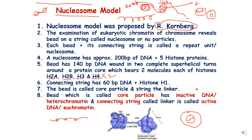A nucleosome has approximately 200 base pairs of DNA plus 5 histone proteins. The bead has 140 base pairs of DNA wound into complete superhelical turns around a protein core bearing 2 molecules each of histones H2A, H2B, H3, and H4. The connecting string has 60 base pairs of DNA plus histone H1. The bead is called the core particle and the string is called the linker. The core particle has inactive DNA or heterochromatin, while the linker DNA is called active DNA or euchromatin.